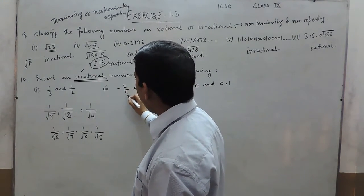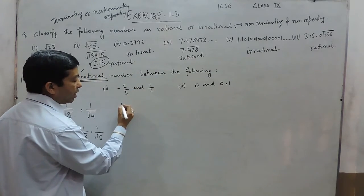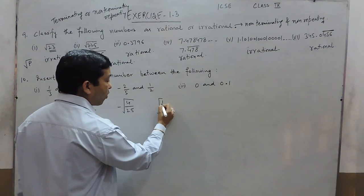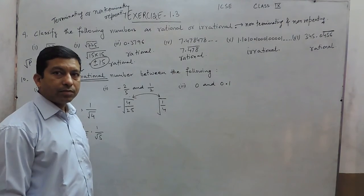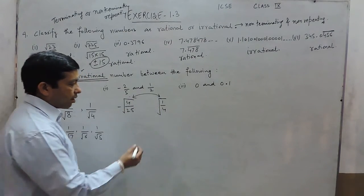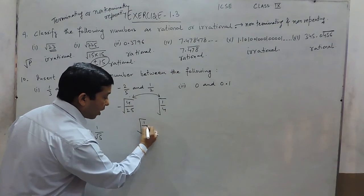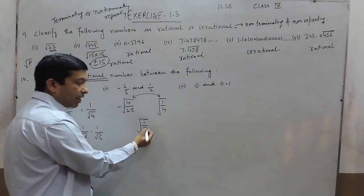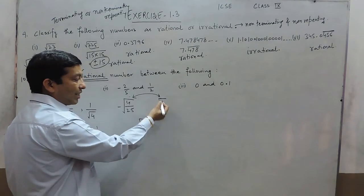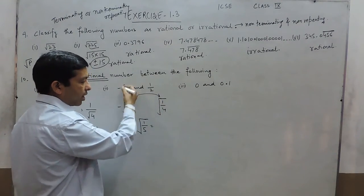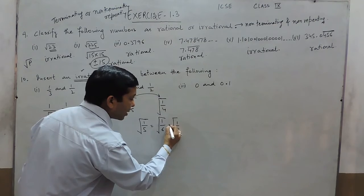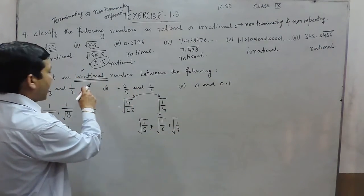When we talk about minus 2 upon 5 and 1 upon 2, this is basically minus 4 upon 25 under root, and this is basically under root of 1 upon 4. So all the positive numbers below this are irrational numbers. Writing 1 upon under root of 5, since the denominator is more than 4, this number will be less than 1 upon 2. Similarly, 1 upon under root of 5, 1 upon under root of 6, 1 upon under root of 7 — all these are irrational numbers between the two.